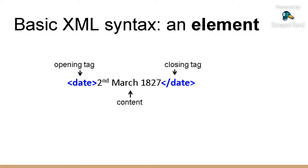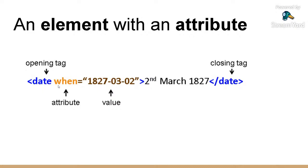So what is a basic XML element? XML is semantic markup, and it's simply formed of an opening tag and a closing tag. The difference between them is that the closing tag has a forward slash before the element name. Everything within those tags is the content. It's useful to mark something up as a date, but we might want to add what's called an attribute and a value to break it down further so that it's computationally understandable. As human beings, we can read '2nd of March 1827' perfectly easily, but if we want the computer to produce a list of all letters sent in 1827, we need to give that date in an analysable format.